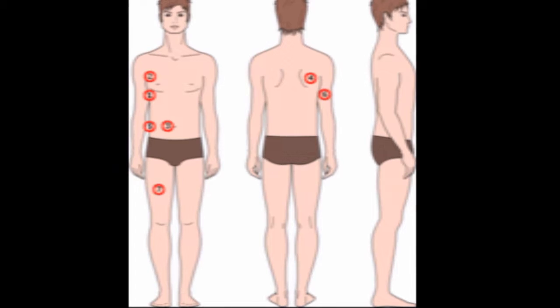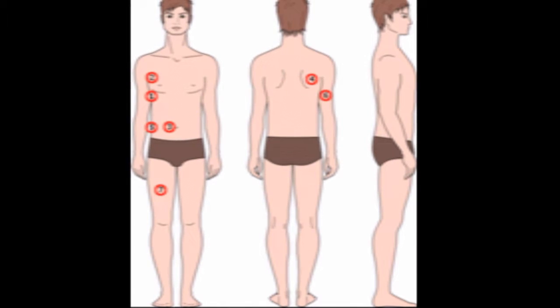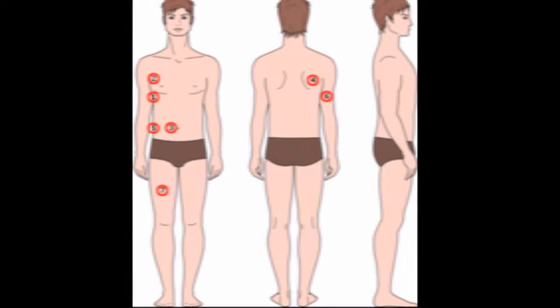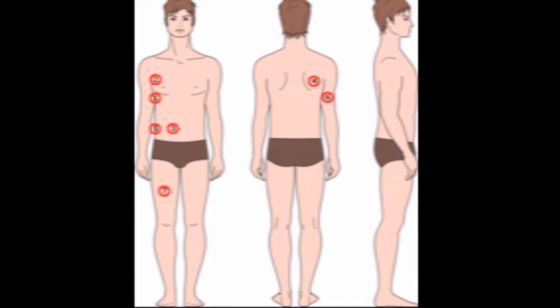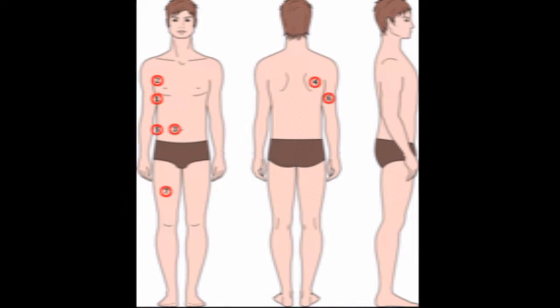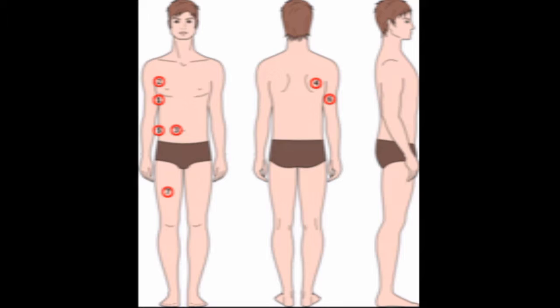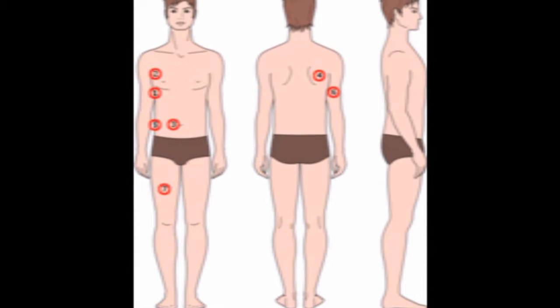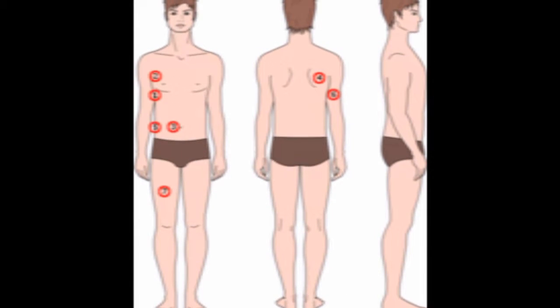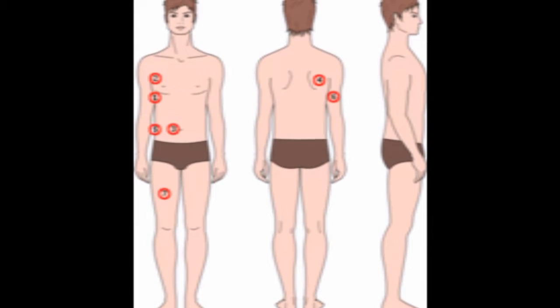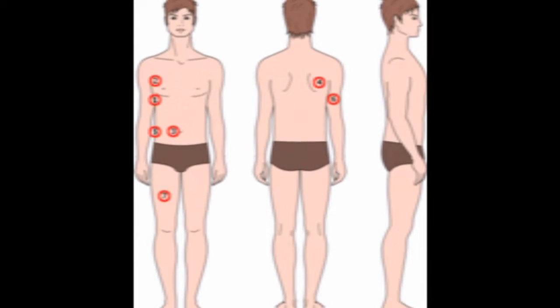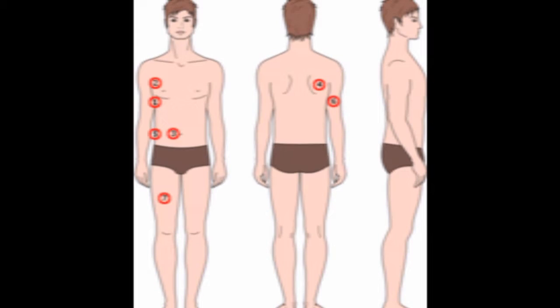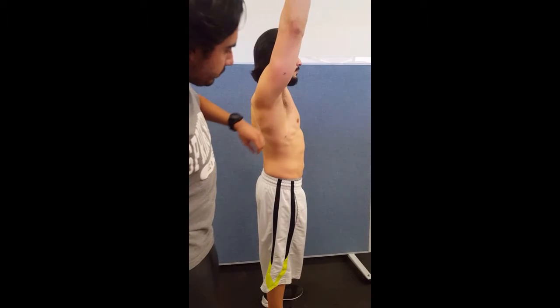These seven sites that we will be measuring are: one, mid-axillary; two, the chest; three, the abdomen; four, subscapular; five, suprailiac; six, tricep; and seven, last but not least, the thigh.